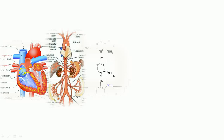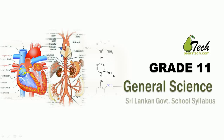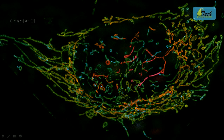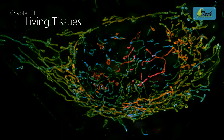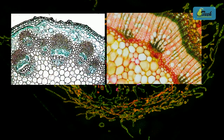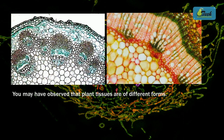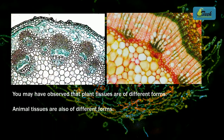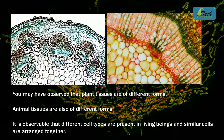Hello, welcome to Pierce Tech Learning Series. We are going to learn Grade 11 General Science as per the Sri Lankan government school syllabus. In Chapter 1, we are going to learn about living tissues. We will see two different living tissues under the microscopic view. Plant tissues are found in different forms, and animal tissues are also of different forms — different cell types are present in living beings, and similar cells are arranged together.